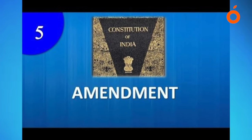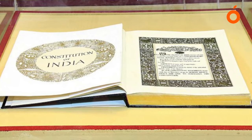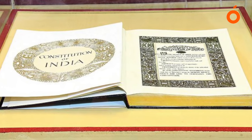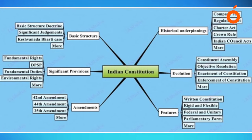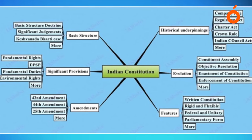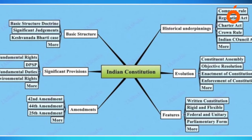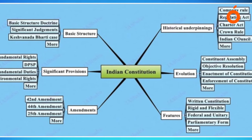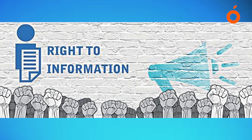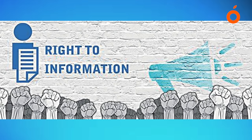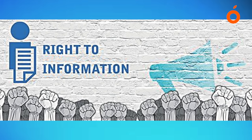The procedure for the amendment of the constitution as laid down in Article 368 is as follows. An amendment of the constitution can be initiated only by the introduction of a bill for the purpose in either house of parliament, and not in the state legislature. The bill can be introduced either by a minister or by a private member and does not require prior permission of the President.